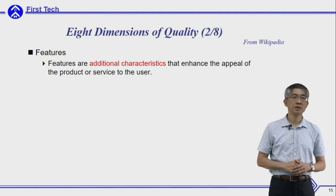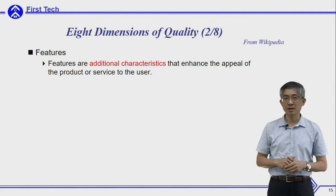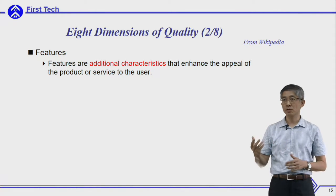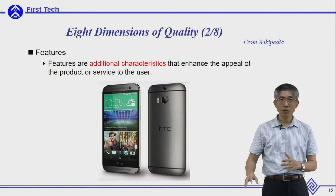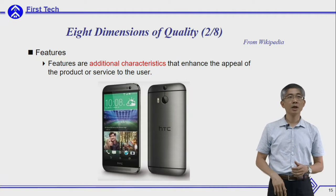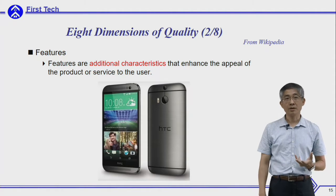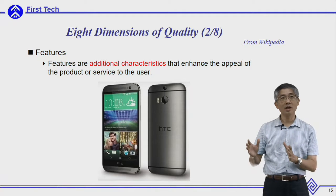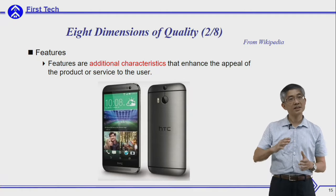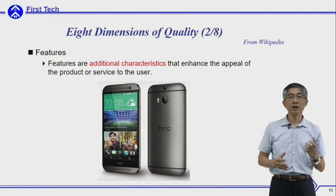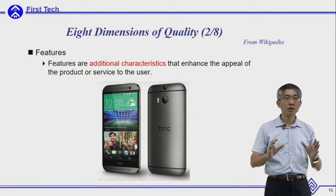The second quality dimension is features. In addition to performance, features are additional characteristics that enhance the appearance or utility of a product or service. When you buy a cell phone, there might be other features — for example, a camera. It can be used as a camera, or even a 3D camera that allows you to shoot 3D images. Although the main function of a cell phone is calling, features enhance the quality of the product.